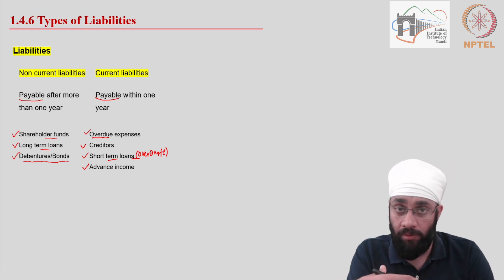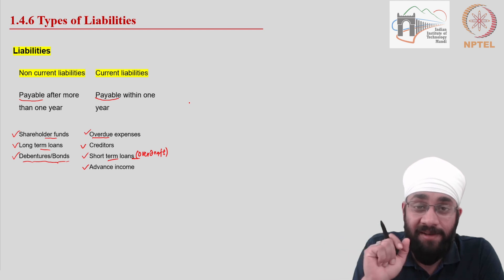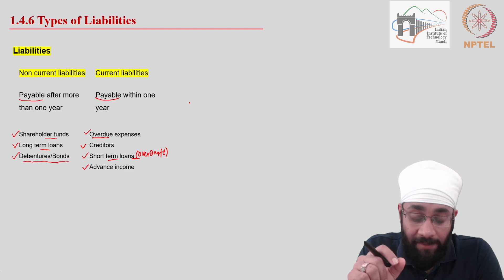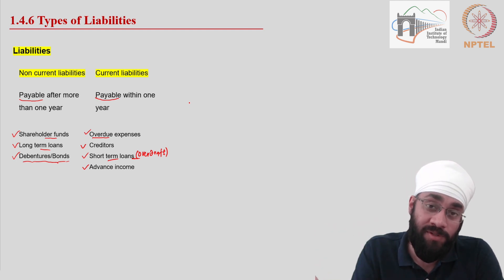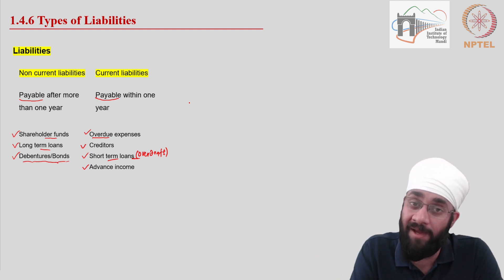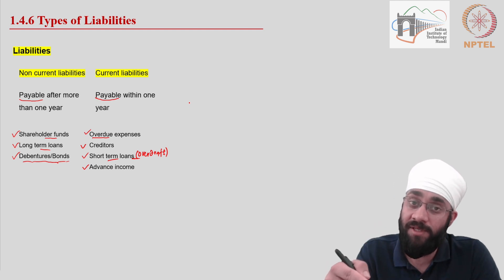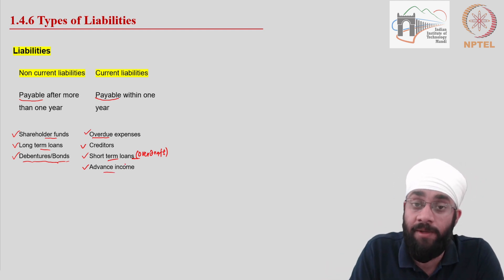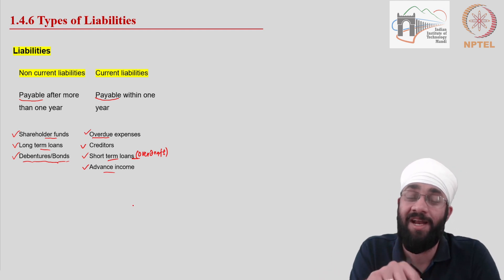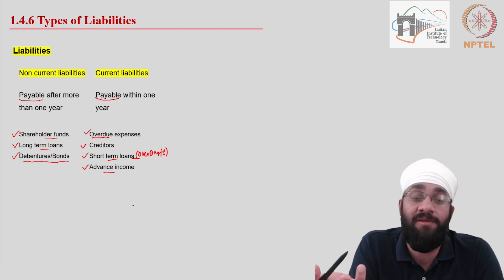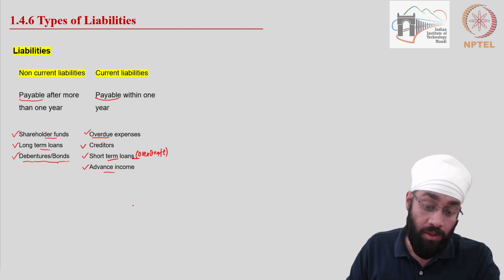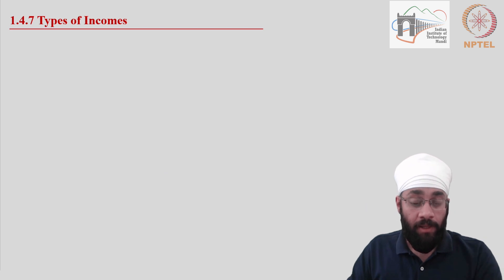Then there is advance income: if your customers give you money and you haven't delivered the goods and services yet, this is also a short-term liability. We call it a liability because if you don't deliver the goods and services, you will be liable to return this money. Until you deliver those goods and services, this money is called a liability. As soon as you deliver the goods, you have discharged your duty and you have right over this income — we start calling it regular income.